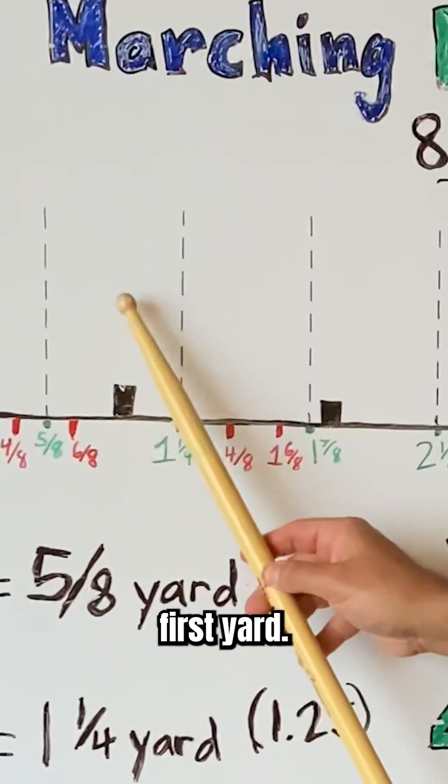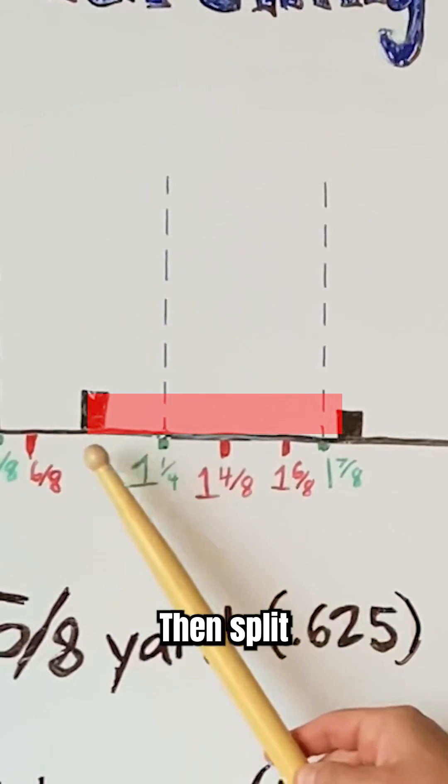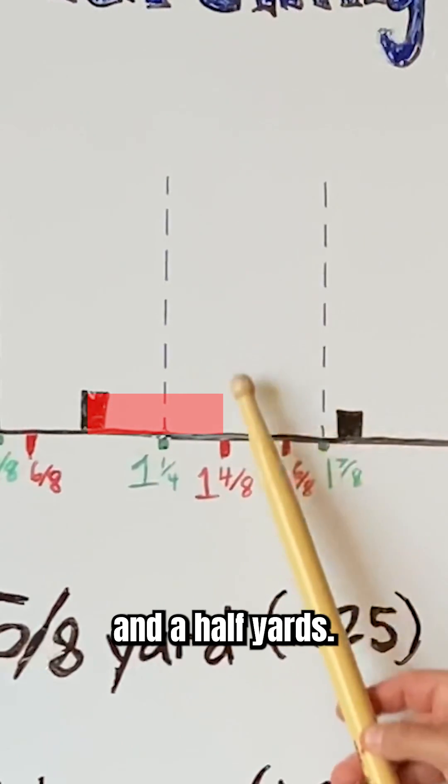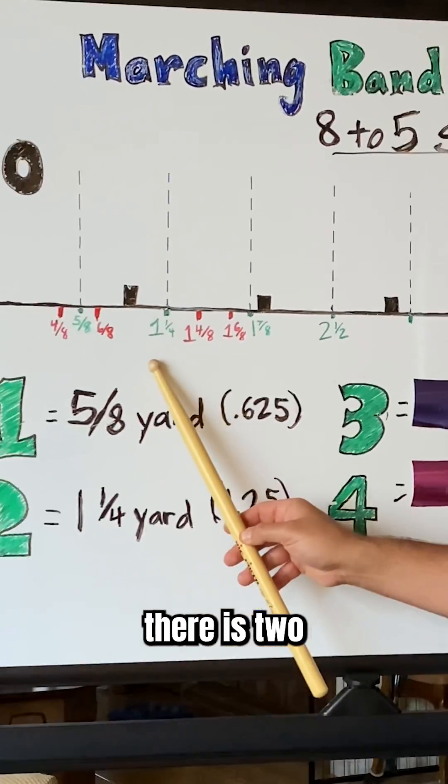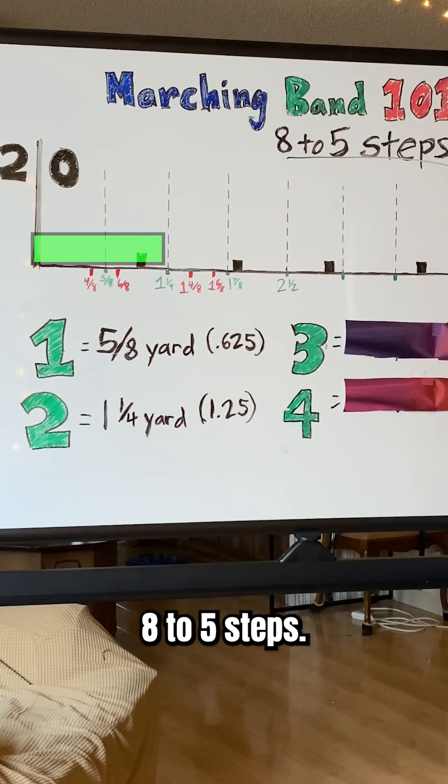To do that, go to the first yard, there's 1, then split that in half. You've got 1 and a half yards. We're going to split that in half. We've got 1 and 1/4 yards. That right there is 2 eight-to-five steps.